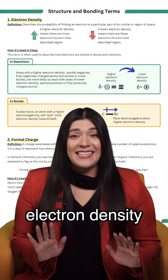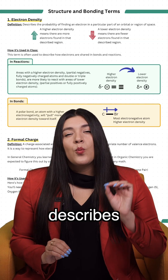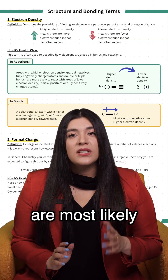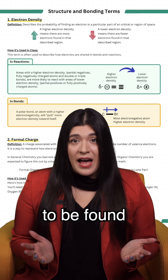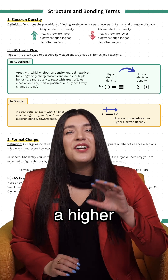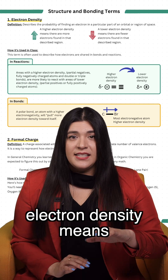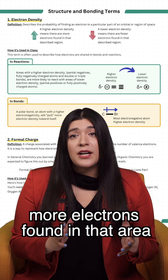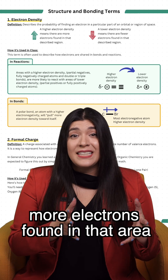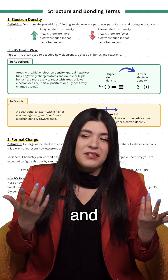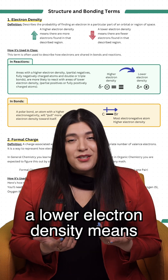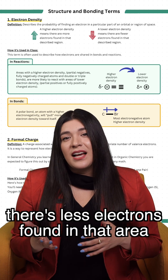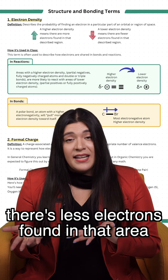Electron density describes where electrons are most likely to be found. A higher electron density means there are more electrons in that area, and a lower electron density means there are fewer electrons in that area.